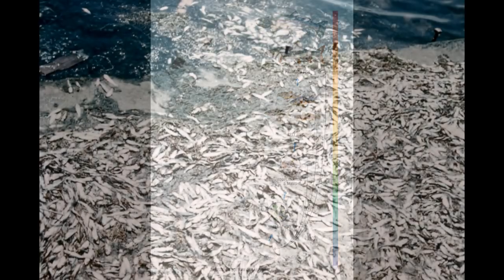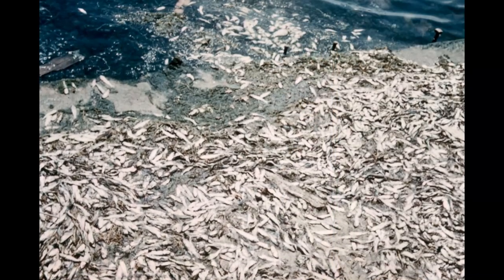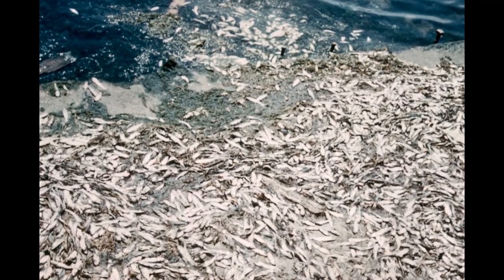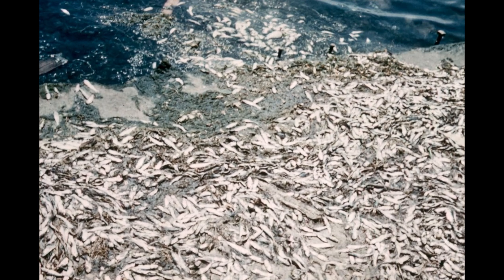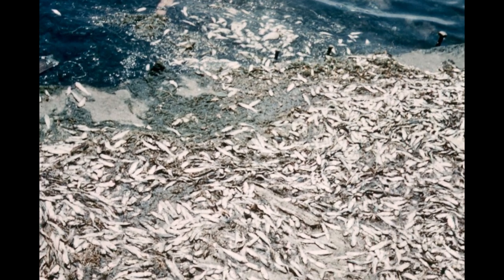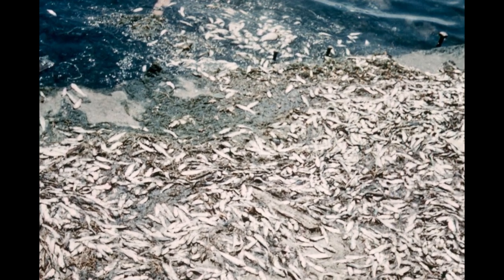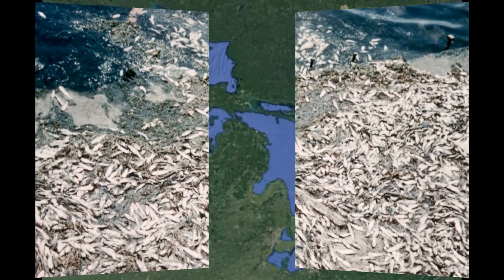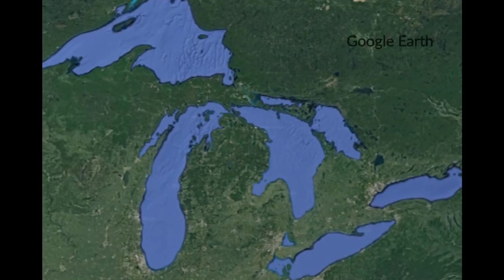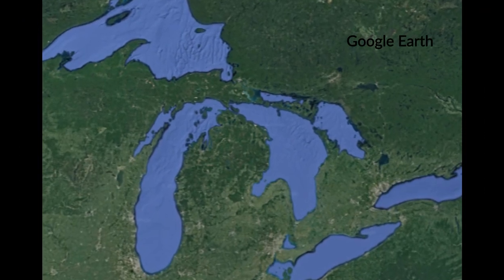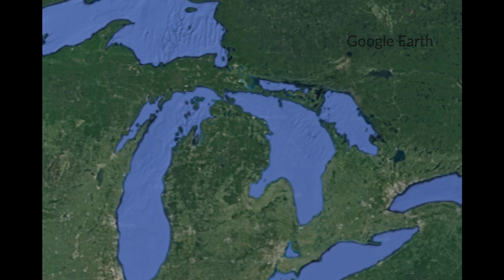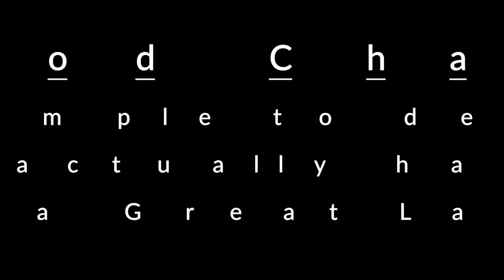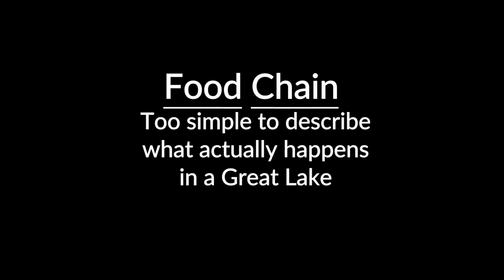Likewise, if we have too much of one type of organism, this may also affect the overall balance and can have negative impacts on the other organisms in the food chain. In a system as large as a Great Lake, simple food chains cannot fully describe the relationship among organisms that feed on each other.